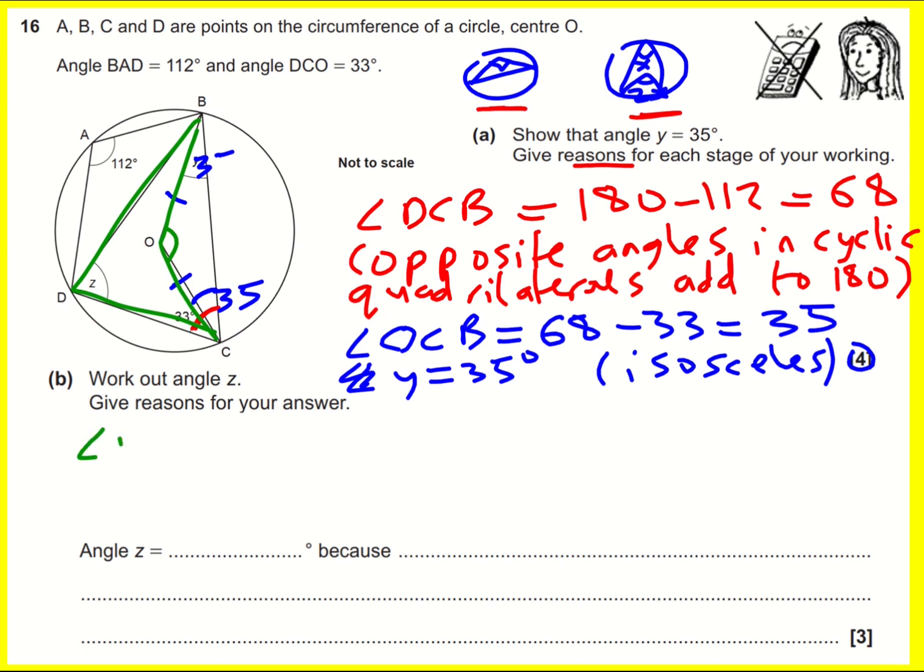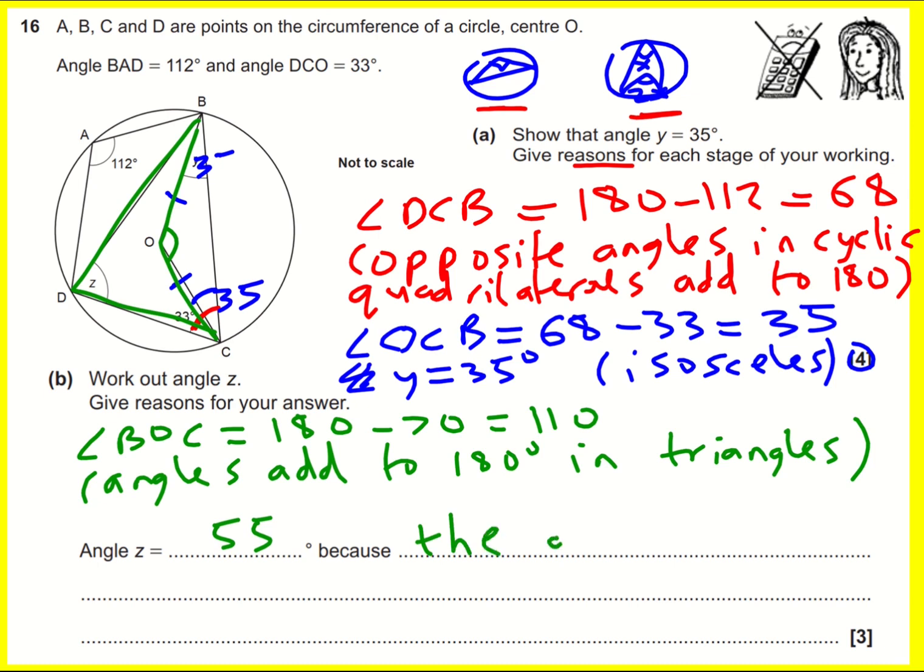So, angle BOC equals 180 degrees minus 70, which is 110 degrees. I need to give a reason: angles add up to 180 in a triangle. And then finally, we can halve that to 55 degrees because the angle at the center is twice that at the circumference.